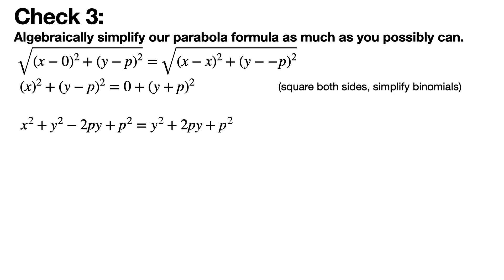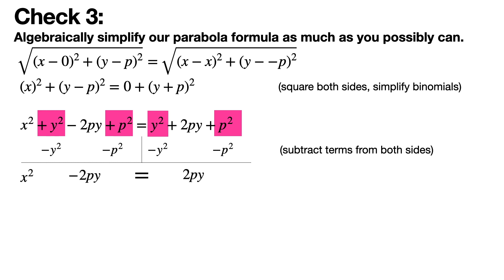You have this longer thing. You can notice that there are the same things on both sides being added. So you can subtract those things from both sides, which is a legal algebraic move. You get x squared minus 2py equals 2py.